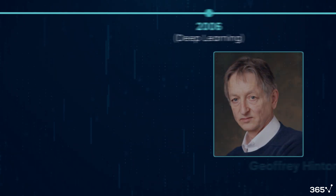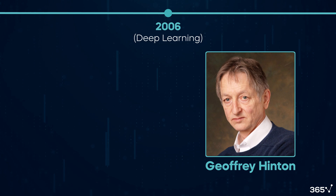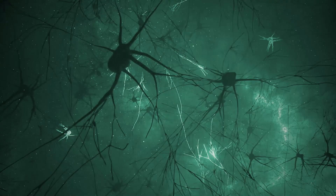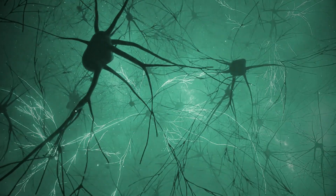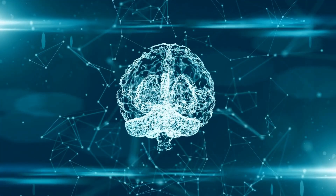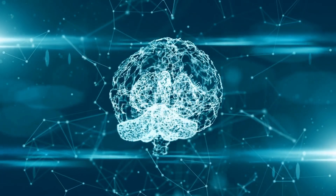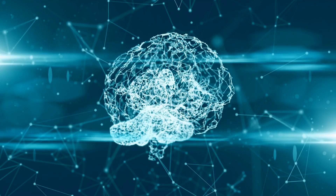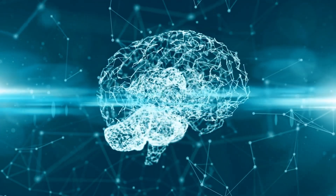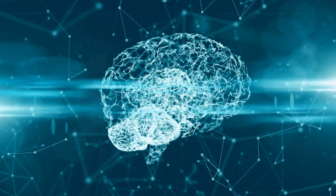It didn't take long before Geoffrey Hinton co-published a paper in 2006, reviving the interest in neural networks with deep learning techniques. Deep learning neural networks are a type of AI inspired by how the human brain works. One needs lots of data and high computational power to run deep learning models, so creating such a model would have been impossible a decade earlier.